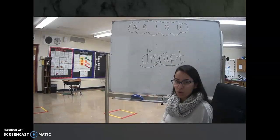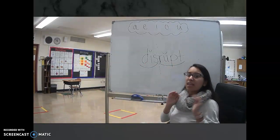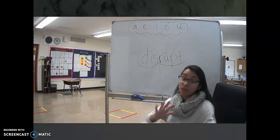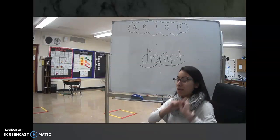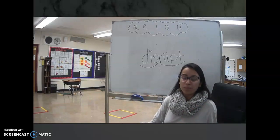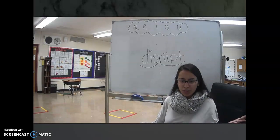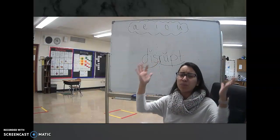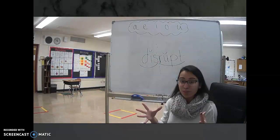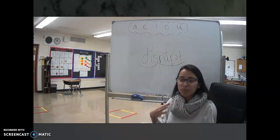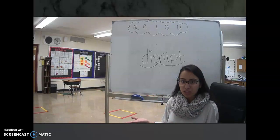Now, to disrupt someone or something is to kind of interject, to kind of get in the middle of it. Maybe stop it. Maybe make a mess of it. So, here's an example. If I was teaching in the front of the room and something fell and made a loud boom. That sound, whatever fell, could disrupt my teaching. It could stop my teaching from happening.